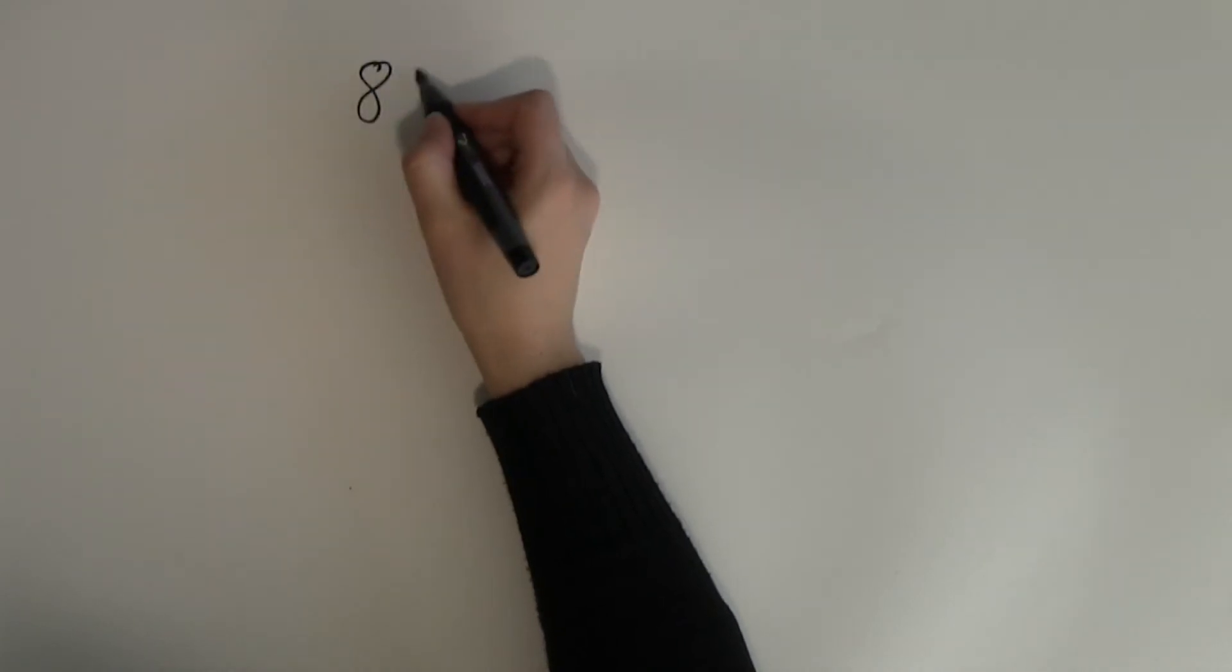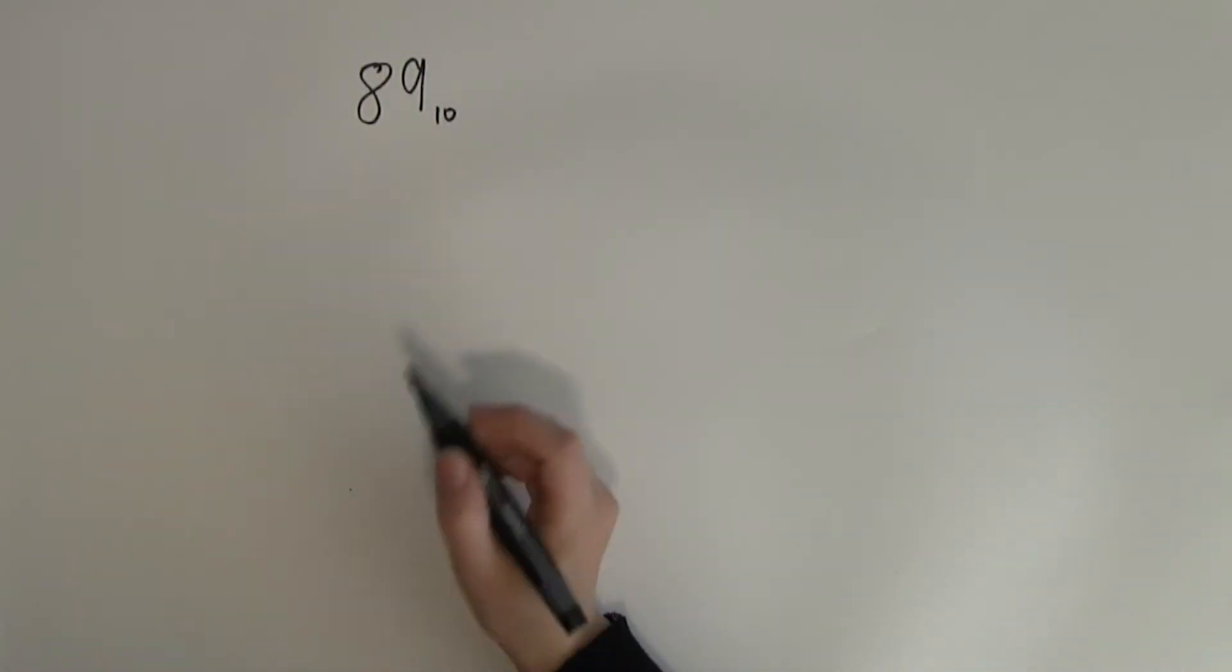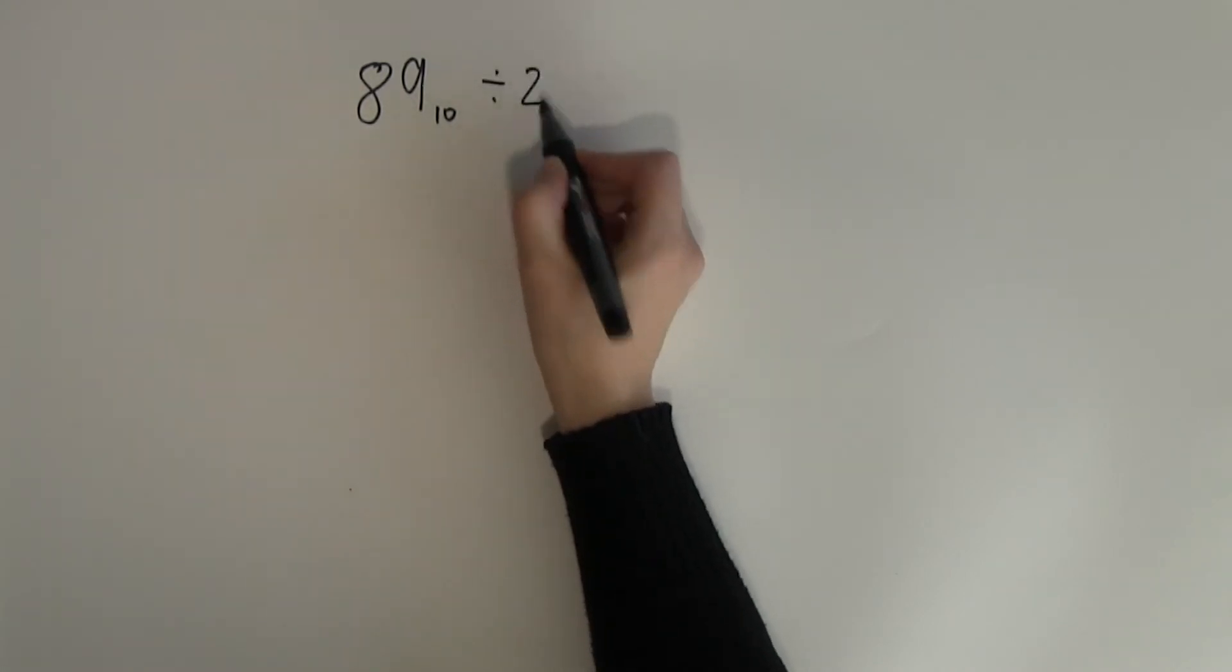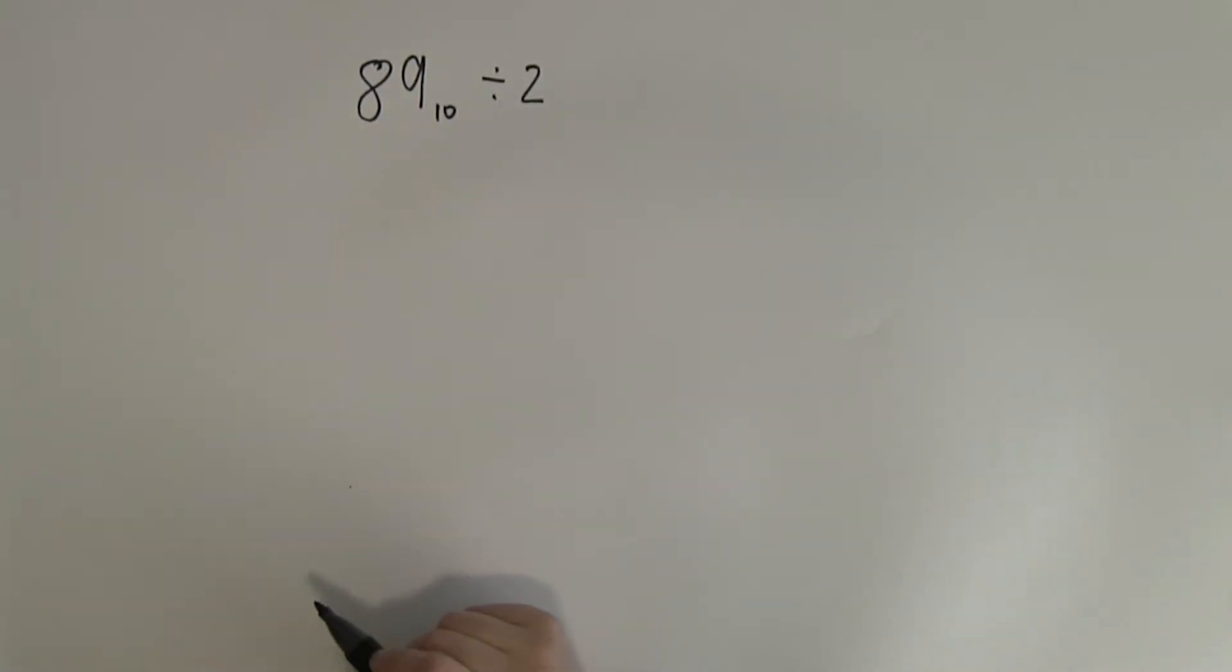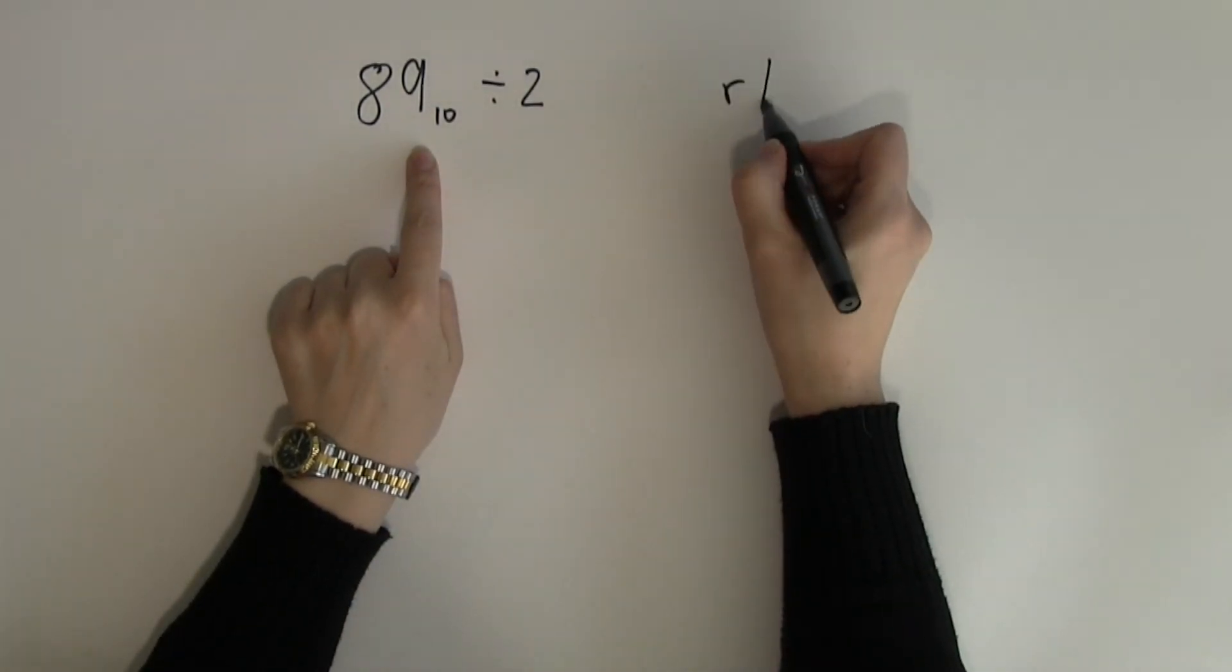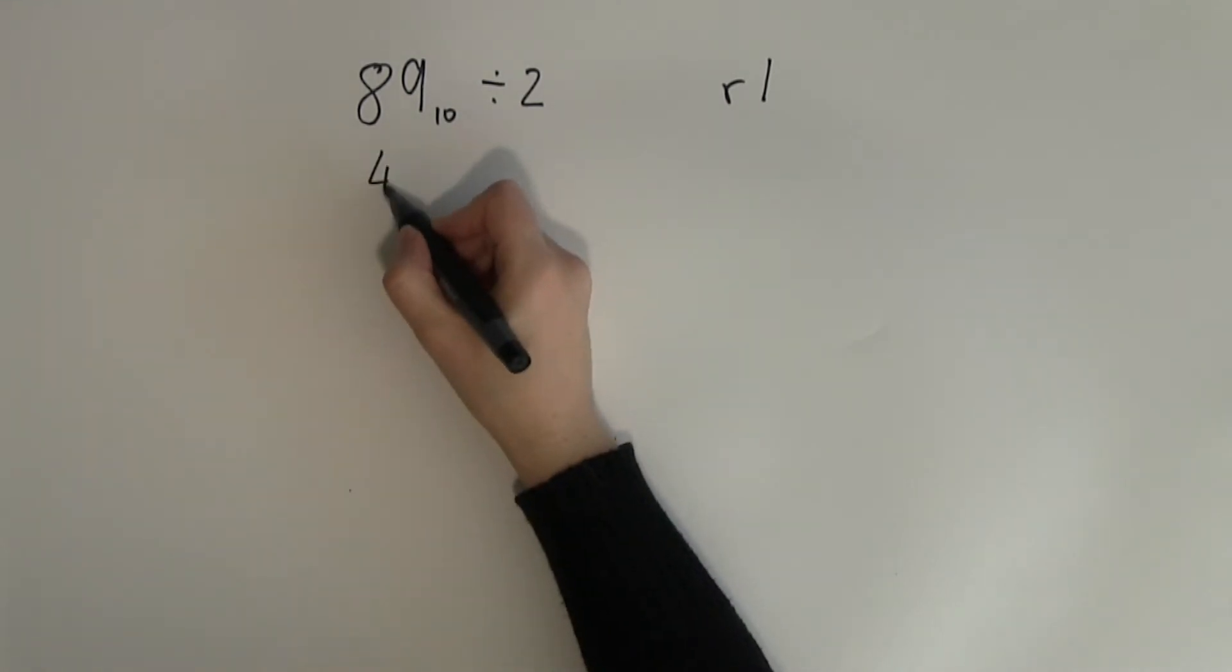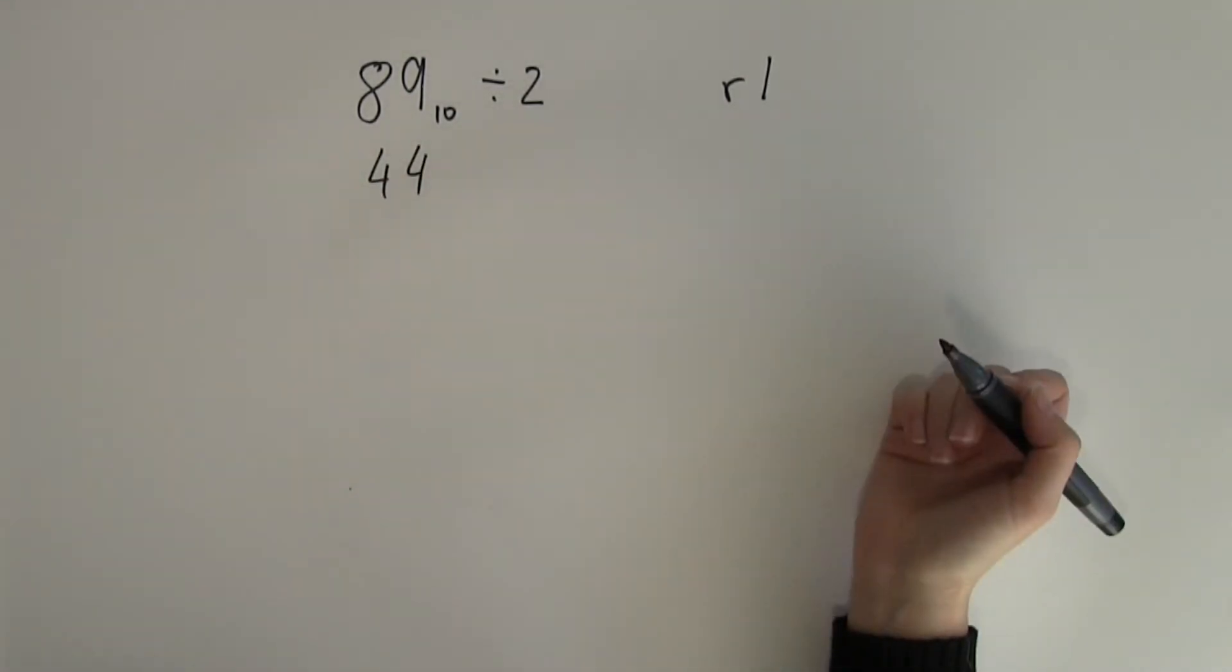Next example 89. Again I need to divide it by 2. So 89 divided by 2. Well this is an odd number so I know that the remainder will be 1. So instead of 89 divided by 2, 88 divided by 2 is 44 so that's slightly easier to do.